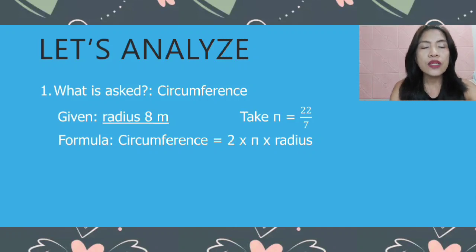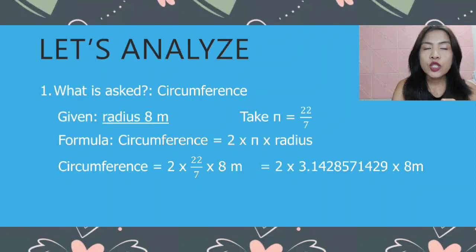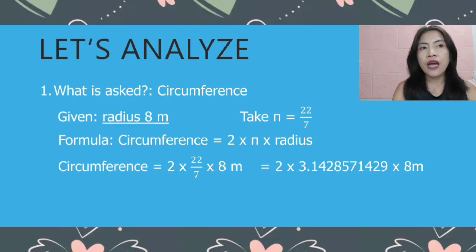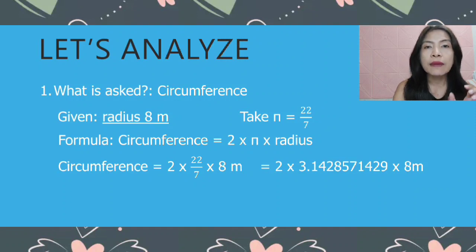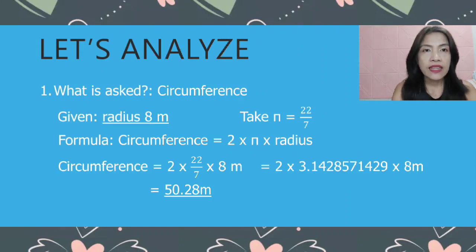The formula we use is circumference equals 2 times pi times radius. So we have 2 times 22 over 7 times 8 meters. I usually do 22 divided by 7 first for pi, which gives 3.142857142 9. Then multiply by 2 times the radius of 8. It gives us 50.28 meters.